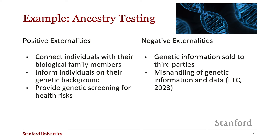To obtain this service, users provide the company with a DNA sample. There are both positive and negative externalities that arise from this. The positive externalities include the ability to connect individuals with their biological family members or inform them about genetic predispositions and health risks. The negative externalities include selling genetic information to third parties and mishandling data. Additionally, ancestry testing has been used to find and convict criminals by mapping out a family tree of distant relatives until a suspect was identified.